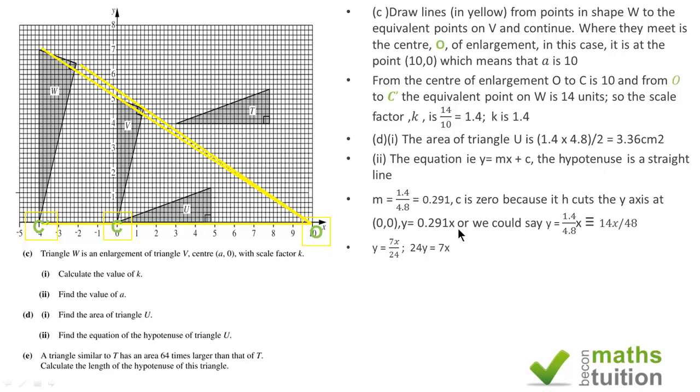That's a neat way of doing it, but you can also say y equals 0.291x, which is the ratio of 1.4 divided by 4.8. But 24y equals 7x, or y equals 7x over 24, is an integral way of expressing your equation.